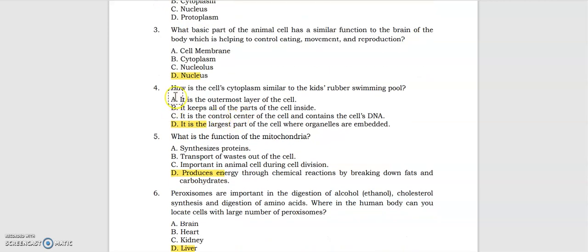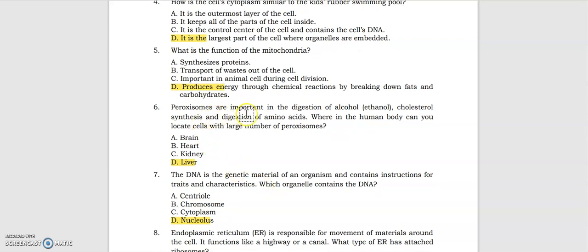Next, number four: How is the cell cytoplasm similar to kids' rubber swimming pools? It is the largest part of the cell where organelles are embedded. Next, what is the function of the mitochondria? It produces energy through chemical reactions. Peroxisomes are important in the digestion of alcohol. So where in the human body can you locate cells with large number of peroxisomes? That's liver.